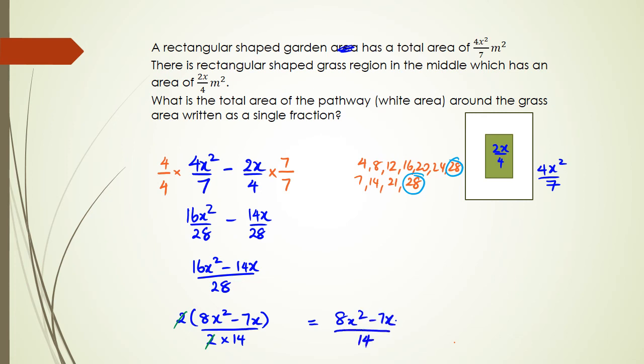Now guys, the reason this happened was partly because of my fault. I think when I wrote the question, I actually put this green area as 2x over 4. And remember that 2x over 4 can be written as x over 2. And so you could have actually got that. That's why you've got that extra step in this question.